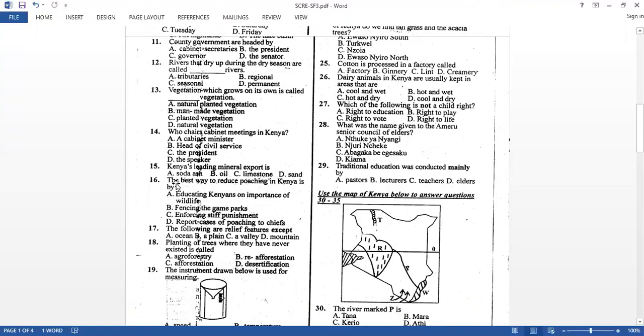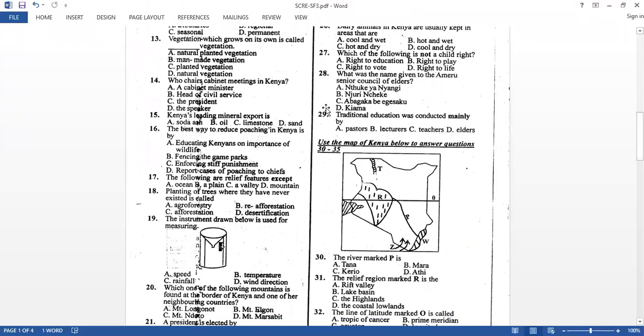The best way to reduce poaching in Kenya is by, most of you failed this question, but just know that anytime you see questions like this, just know that prevention is better than cure. So the best thing you're supposed to do is to educate people or create what you call public awareness so that people will know the importance of conserving wildlife. So educating Kenyans on importance of wildlife or creating what you call public awareness on the conservation of wildlife. But now if you say most of you are choosing reporting cases of poaching to chiefs, that one also will not help much. But when now the majority of people are educated on the importance of wildlife, they'll be able to conserve or reduce poaching.